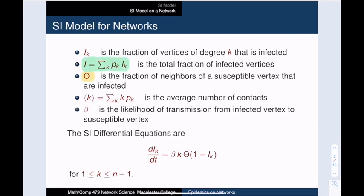Next, we introduce a function theta to represent the fraction of neighbors of a susceptible vertex that are infected. We will make the simplifying assumption that theta is independent of the degree of the vertex. Let's defer talking about the actual formula for theta for the moment. We will return to that later. For now, the important thing to note is that if v has degree k, then the number of infected neighbors that it has is theta times k. And that 1 minus i sub k is the number of degree k vertices that are susceptible. To get the change in the number of infected degree k vertices, we multiply the product of these two by beta, the likelihood of transmission.